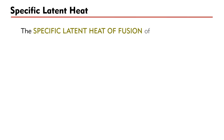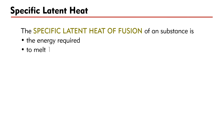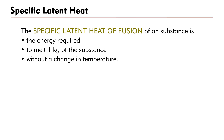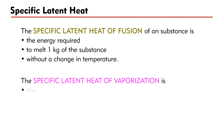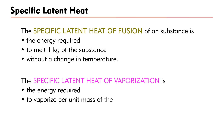The specific latent heat of fusion of a substance is the energy required to melt one kilogram of the substance without a change in temperature. You may replace one kilogram by per unit mass. For example, the specific latent heat of vaporization is the energy required to vaporize per unit mass of the substance at a constant temperature.